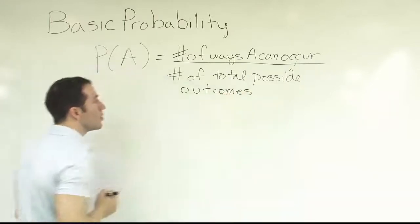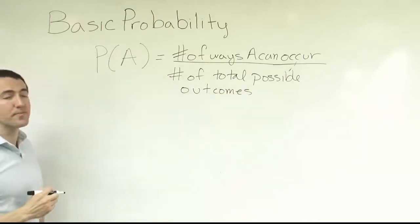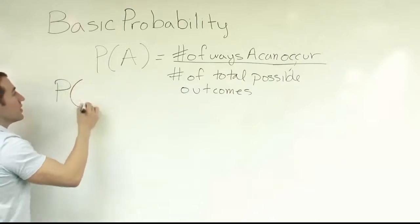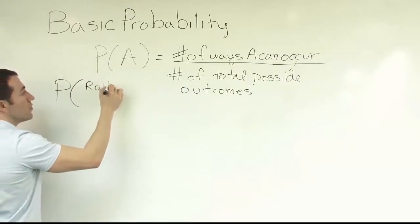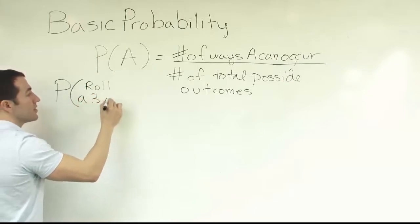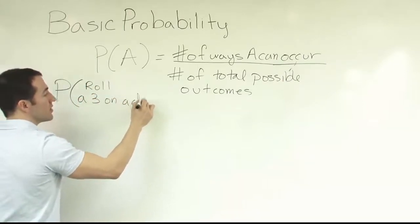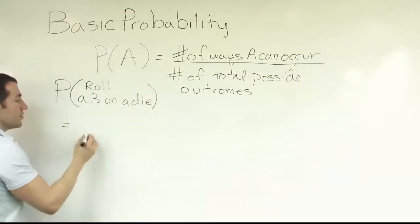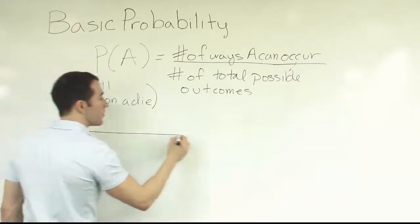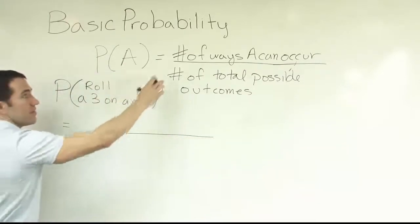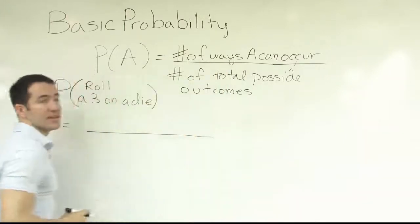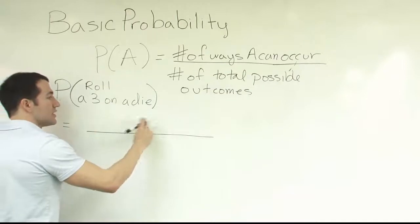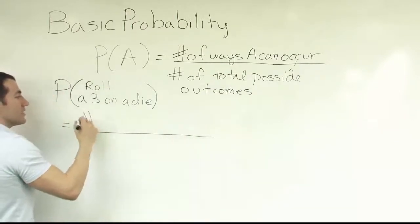So let's look at a problem to illustrate how this works. If we start with the probability that we roll a three on a single die, that can be broken down into a fraction fitting this format. The number of ways A can occur, in this case, will be the number of threes on the die — that's how it will translate.